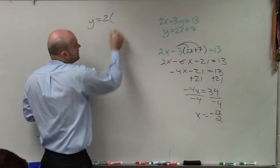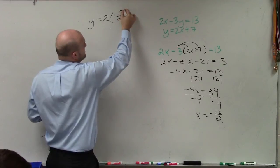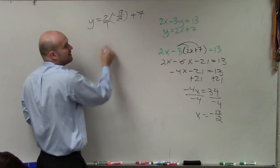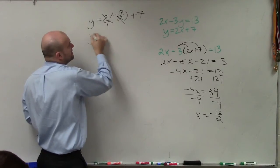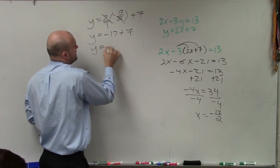So I have 2, not times x, but the value of x, which is negative 17 halves plus 7. And then you guys can see here, multiplying fractions, the 2s divide into 1, so I have negative 17 plus 7, y equals negative 10.